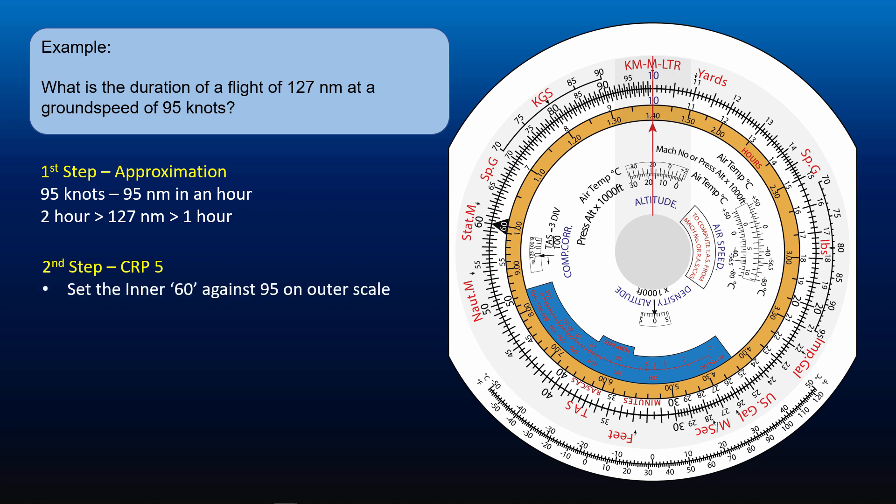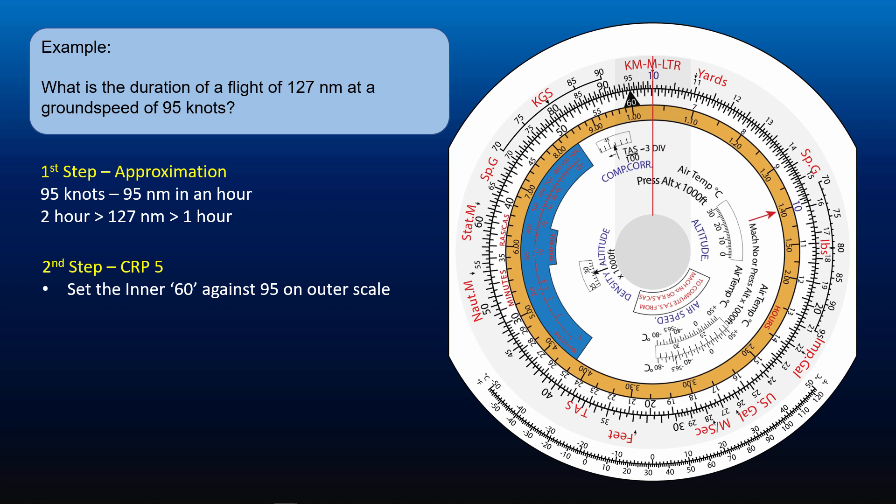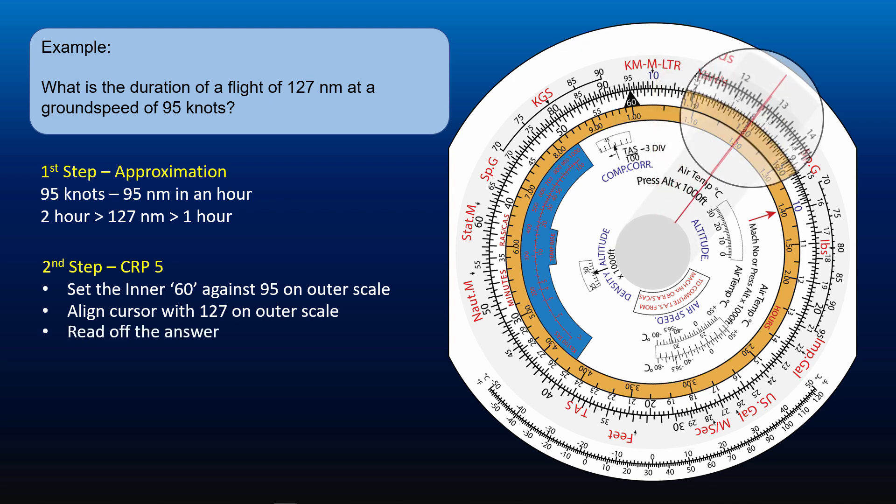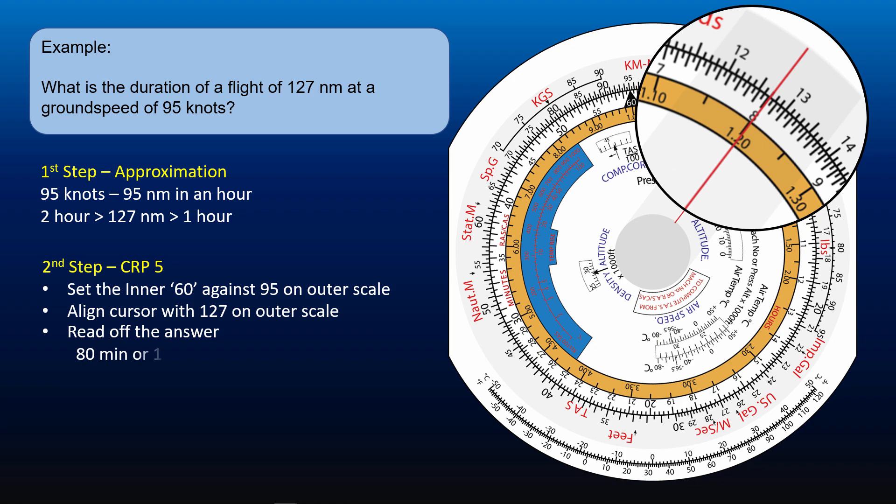Now set the inner 60 index mark against 95 on the outer scale. And then position the cursor against 127 on the outer scale. Read off the duration of the flight on the inner scale. 80 minutes, or 1 hour and 20 minutes.